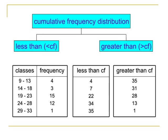The same process is used to get the less than cumulative frequency for 19 to 23: add 4, 3, and 15 to get 22. For 24 to 28, add 4, 3, 15, and 12 to get 34. For 29 to 33, this refers to the total number of observations, so the less than cumulative frequency is 35.